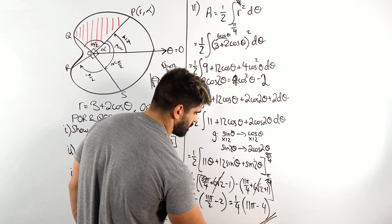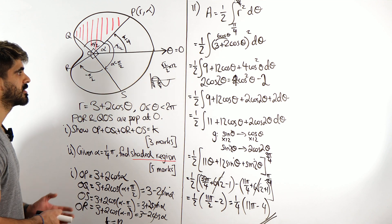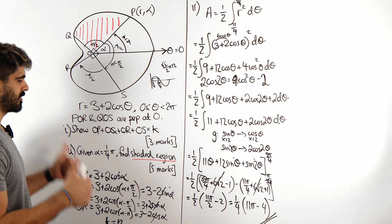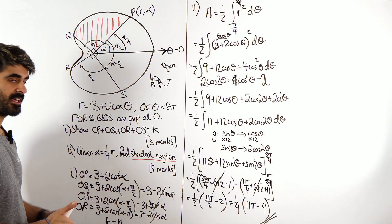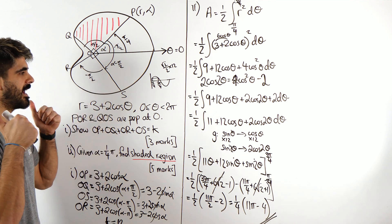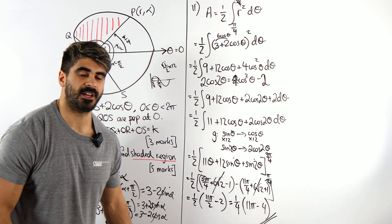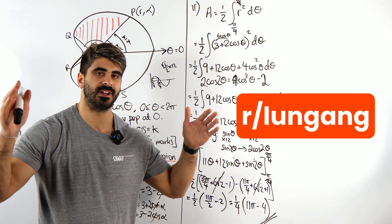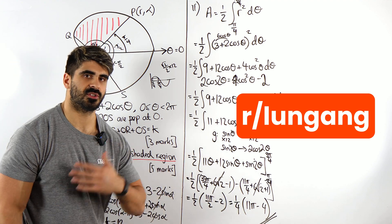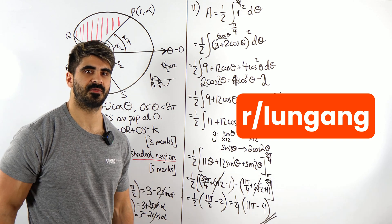And that is our answer — a quarter of (11 pi minus 4) — for 5 marks. A cheeky 8 marks total for everything. If you learned something new, hit the like button and subscribe for more content like this. Join the Discord, submit questions there and we can discuss answers, or I might make a video on it as well. See you in the next video!